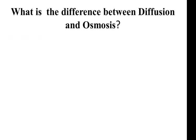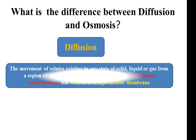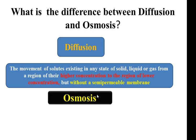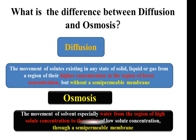What is the difference between diffusion and osmosis? In diffusion, molecules move from high to low concentration without a semipermeable membrane. In osmosis, water and solvent — especially water — move from high concentration to low concentration through a semipermeable membrane.